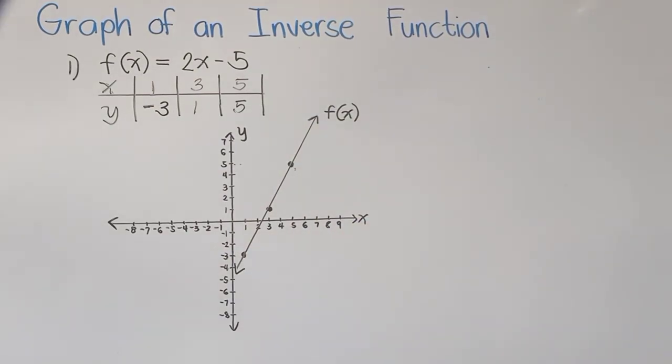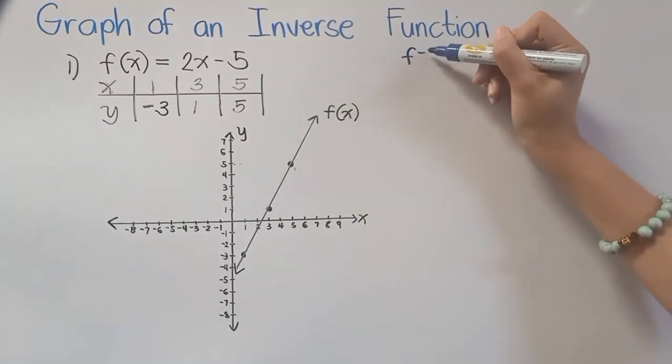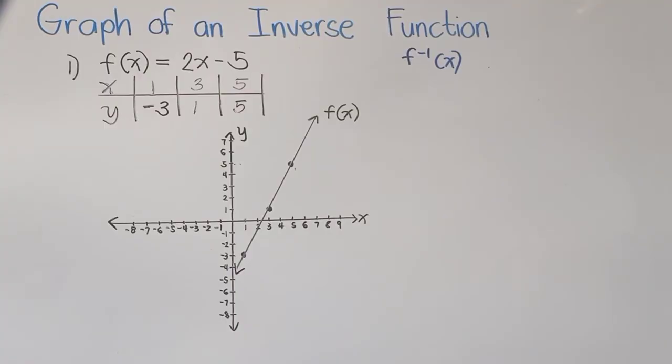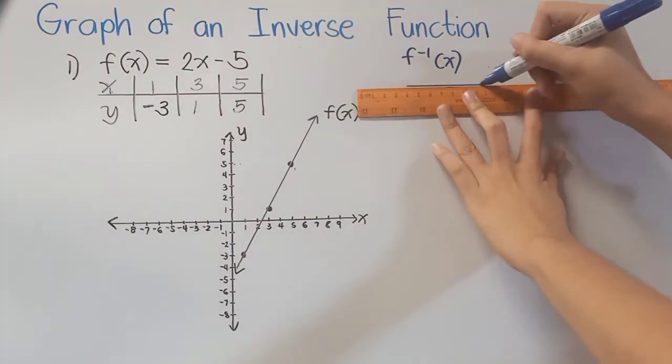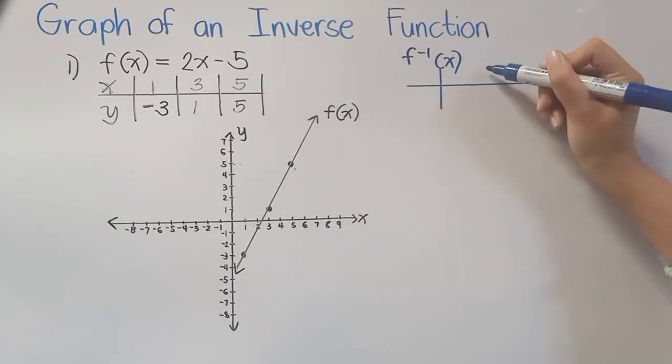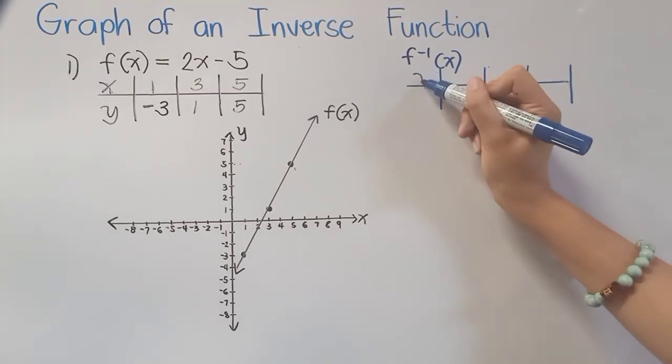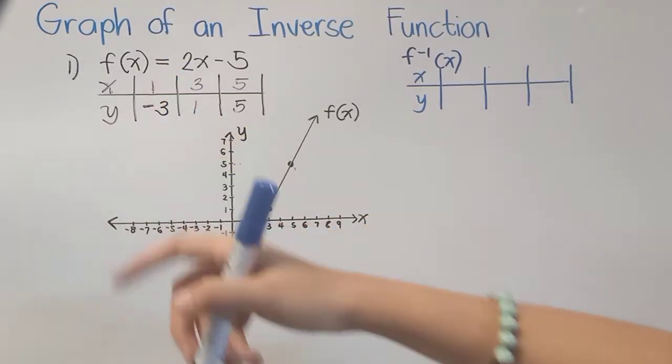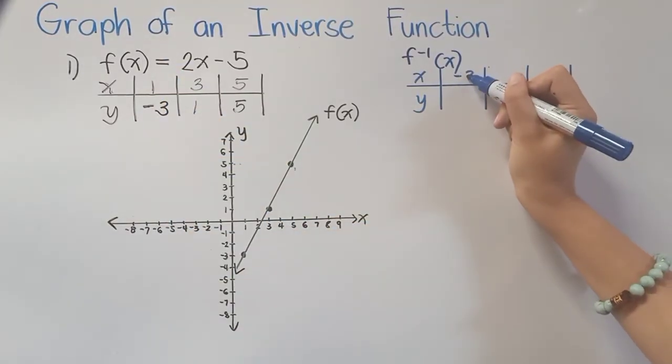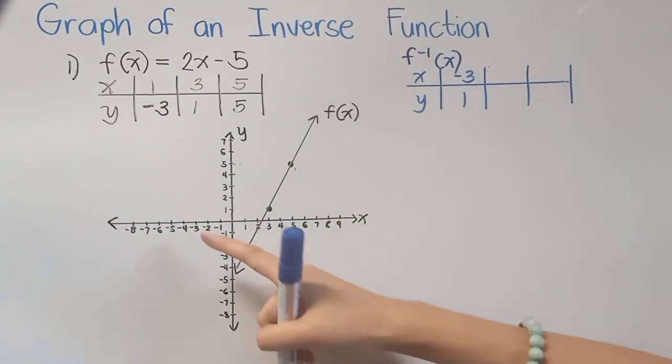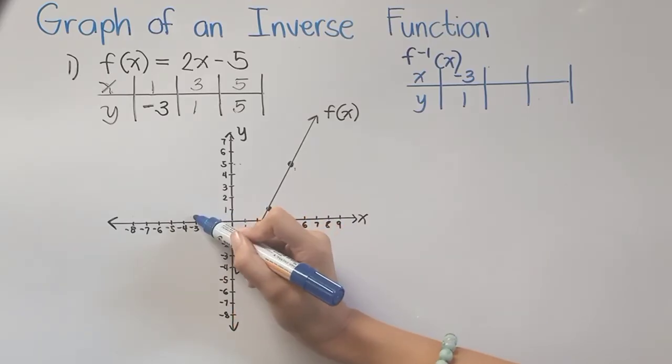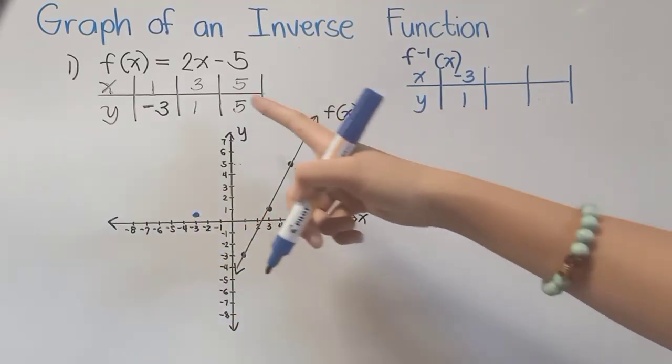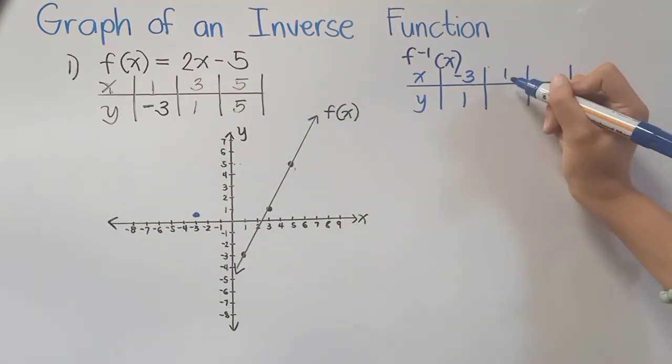Now let us get the graph of our inverse function. So we have here f^(-1)(x). I will first create a table here for x and y. Now our x this time will be negative 3 paired to 1. Plotting that one, we have here this point. I will be using here a blue pen so that we can identify the graph of the inverse function.